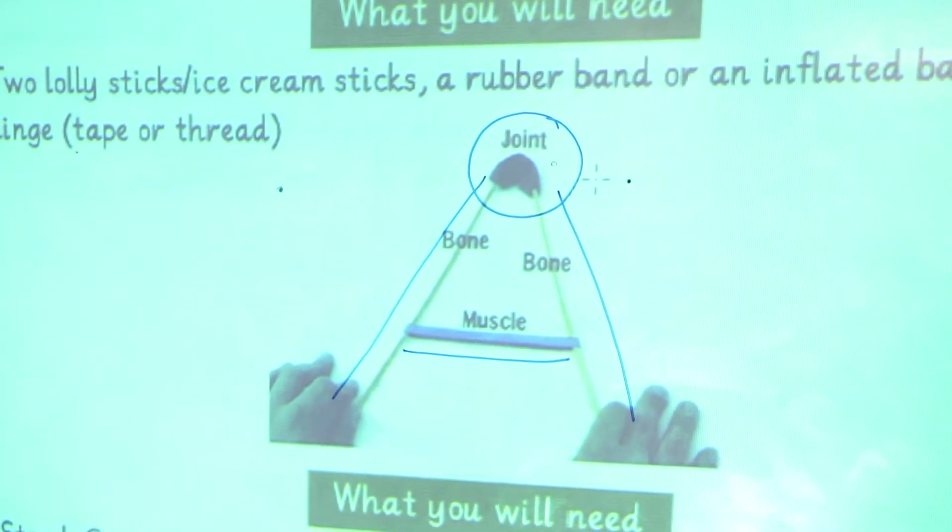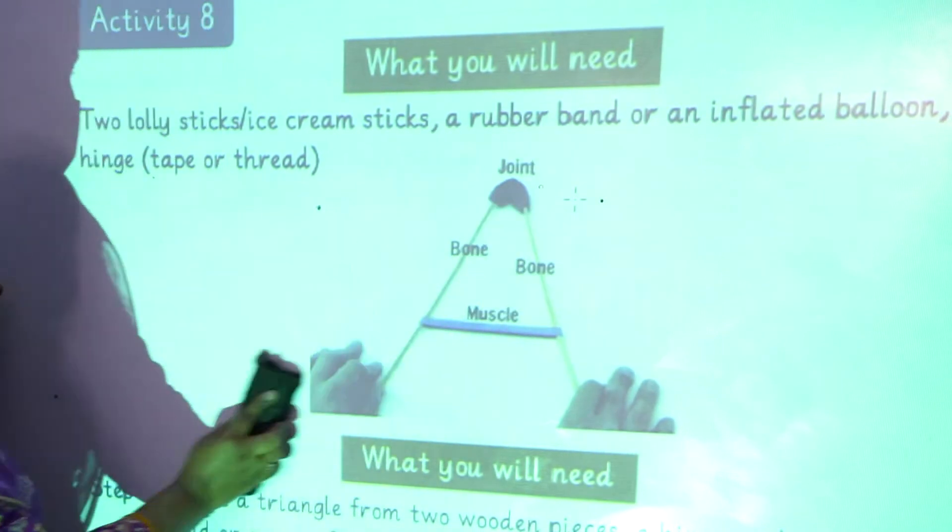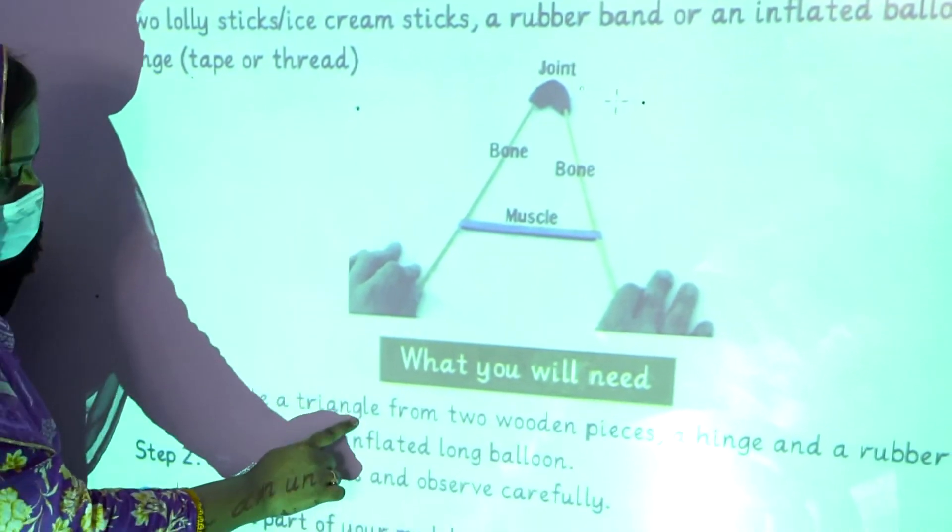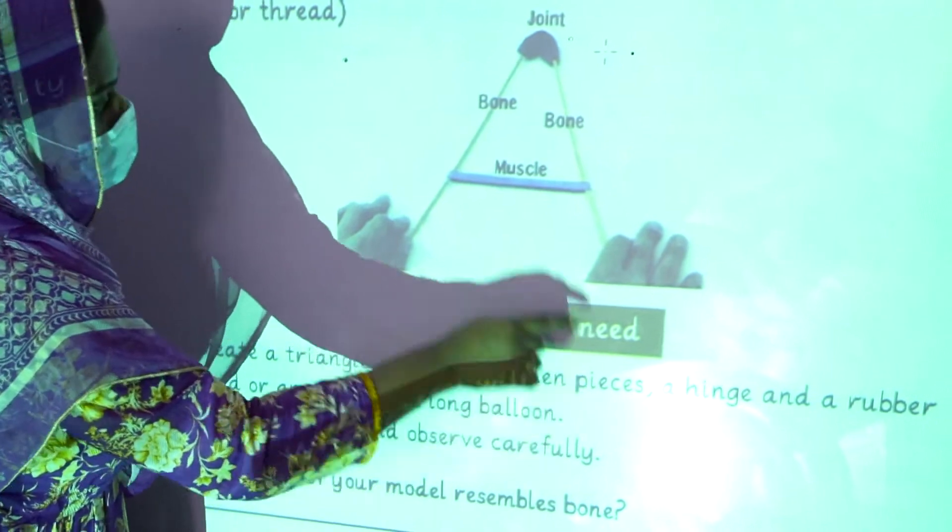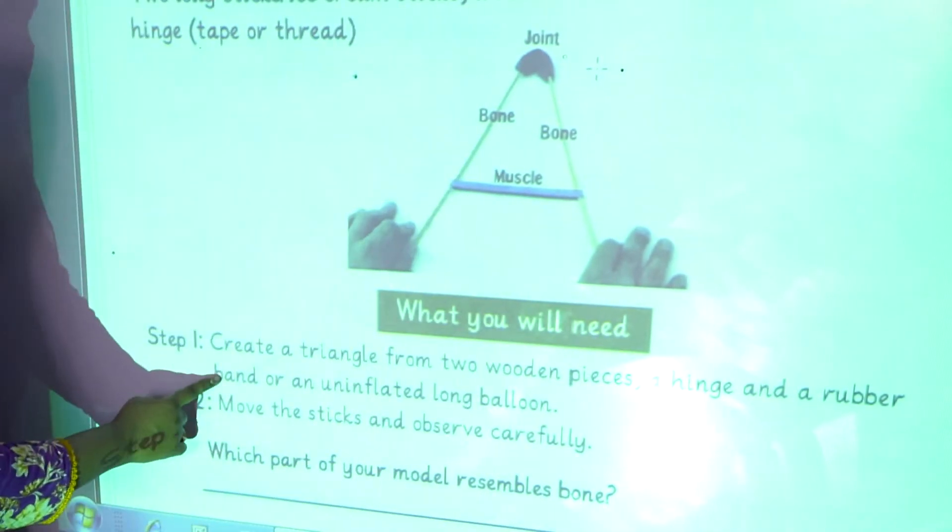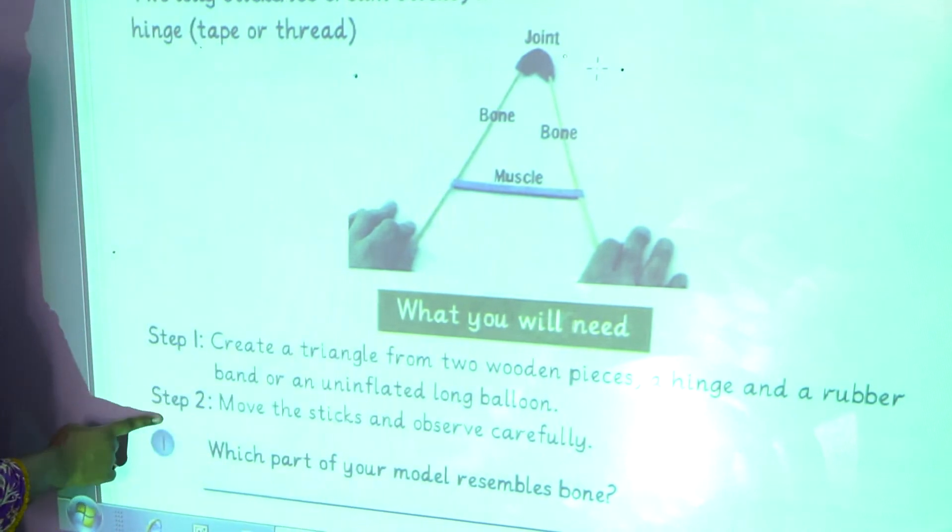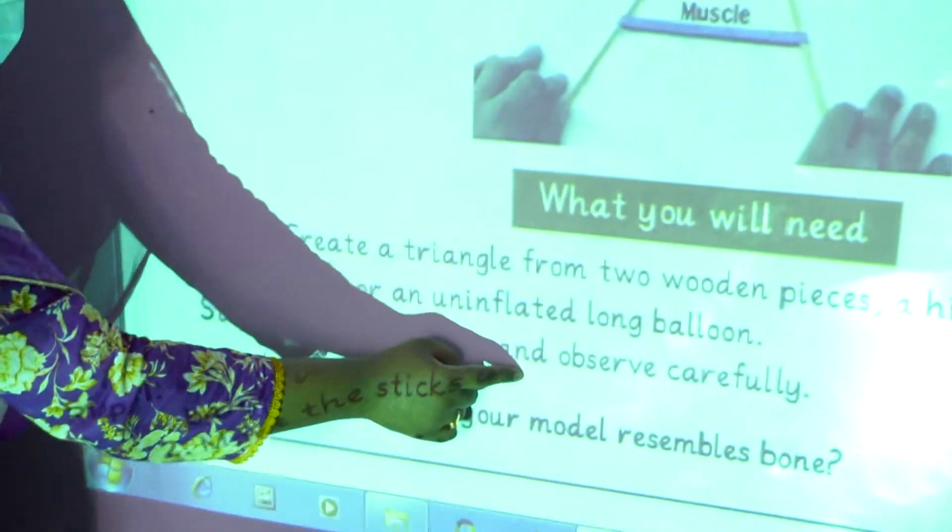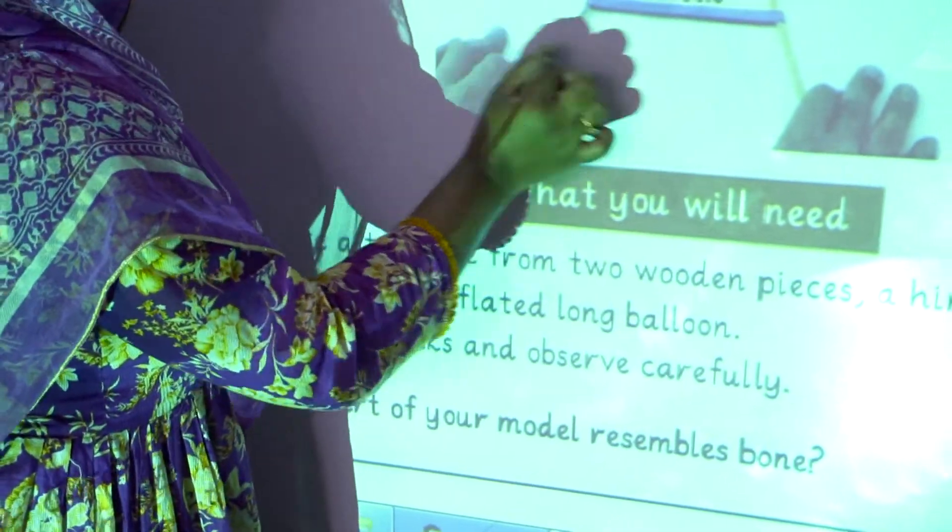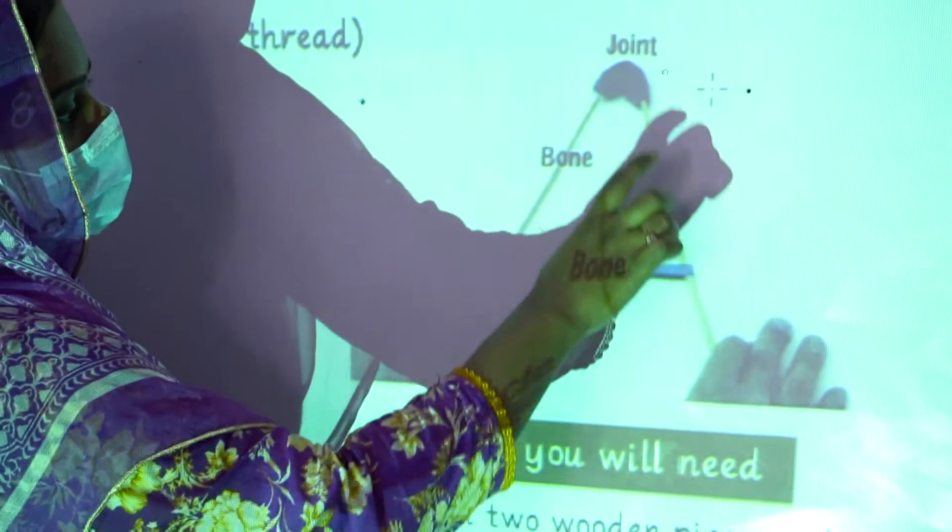What we have to do in this activity: create a triangle from two wooden pieces like this, a hanger and a rubber band or an uninflated long balloon. Step number 2, move the stick and observe carefully. You have to move the sticks and observe carefully what is going on in this activity.